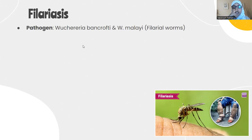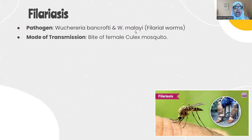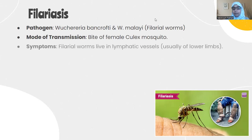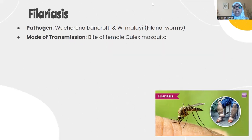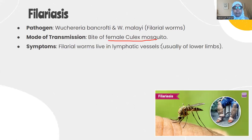The pathogenic agents are Wuchereria bancrofti and Wuchereria malayi, also known as filarial worms. The mode of transmission is through the bite of the female Culex mosquito — unlike malaria, which is transmitted by the Anopheles mosquito. Symptoms include swelling and edema.